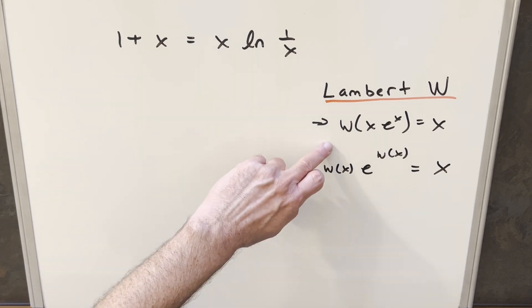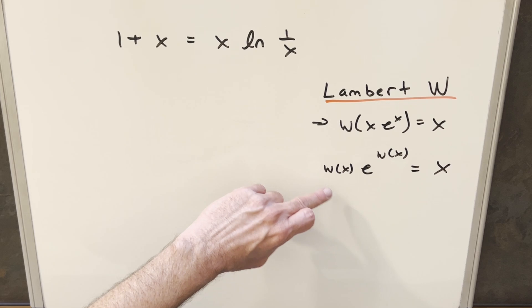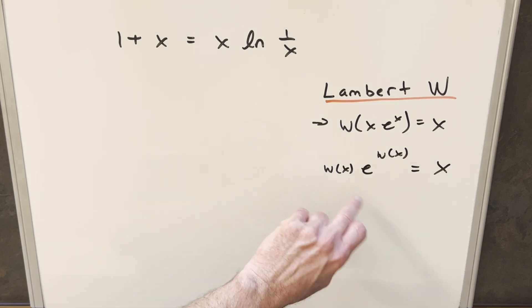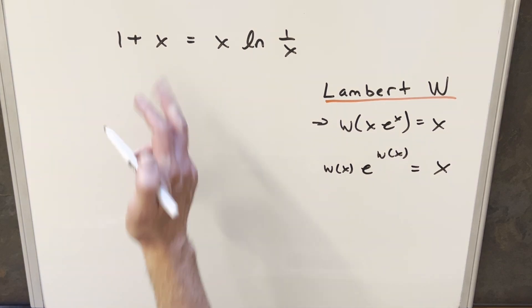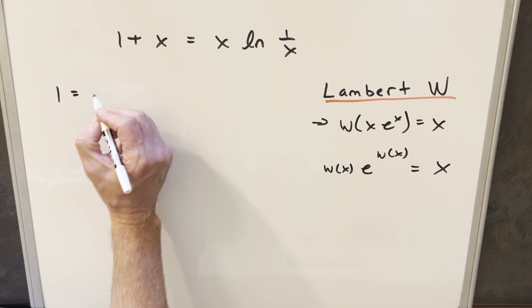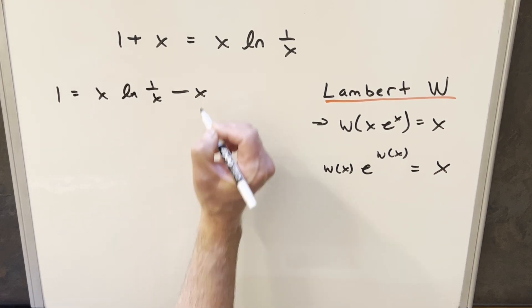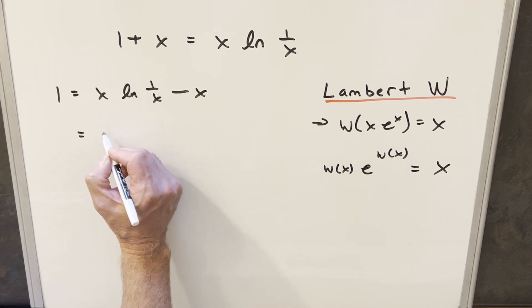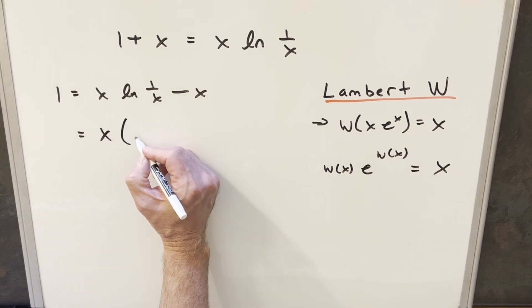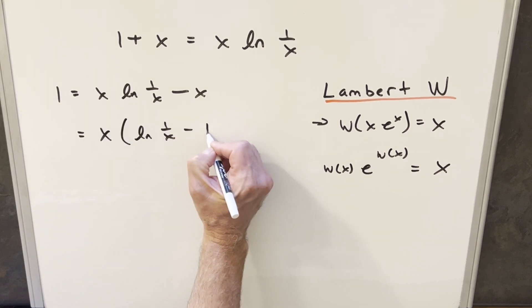For this one, we're just going to kind of use these definitions we have here, particularly the first one. And this one here is going to be useful as well. So first, let me take this and let's just subtract an x on both sides so that we have x ln 1 over x minus x. And then I'll factor out an x here. So we have x ln 1 over x minus 1.